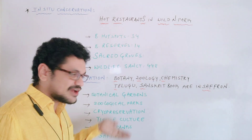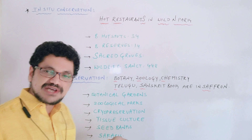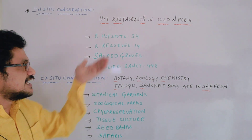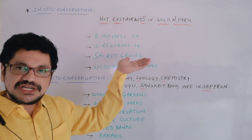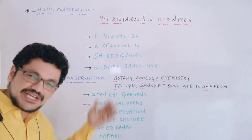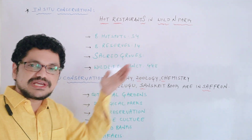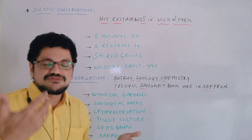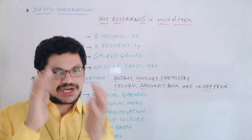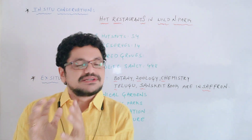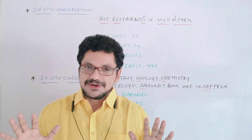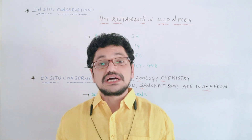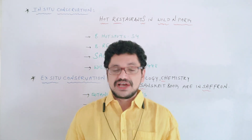So these are all the methods which come under ex-situ conservation and in-situ conservation. In-situ conservation is protecting the organism where it is living. Ex-situ conservation is taking the animal from its natural habitat and keeping it in separate enclosures. These are the two ways of conserving biodiversity.